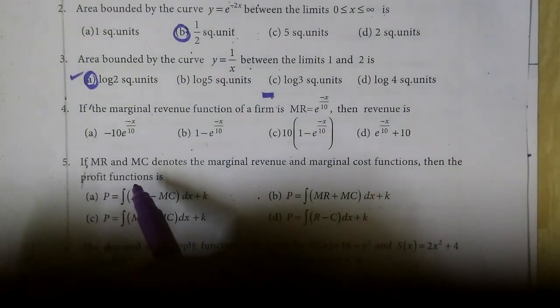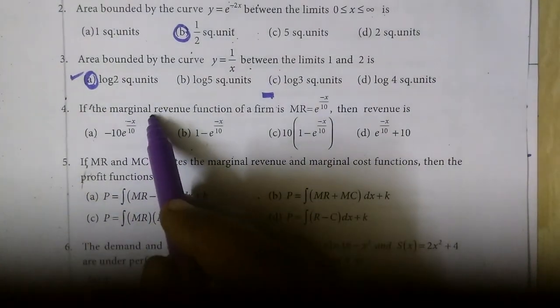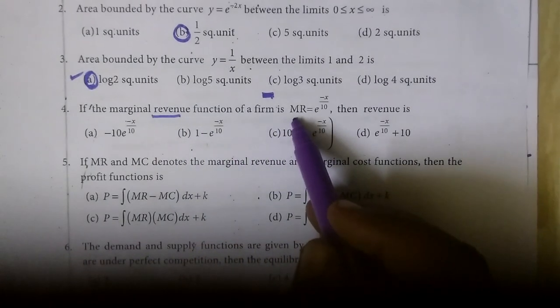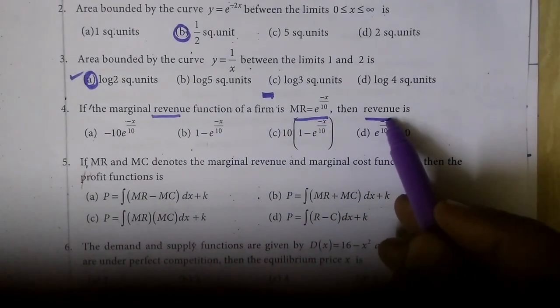Now we see the fourth question. It is the marginal revenue. Marginal revenue weanthu, nama kuruttu irukkai. MR equal to this one. You want to find the revenue.